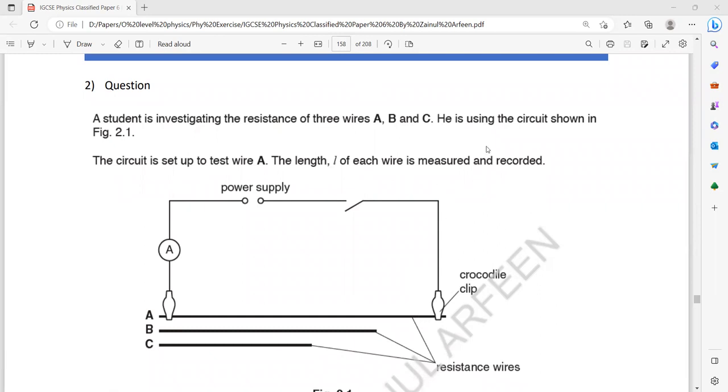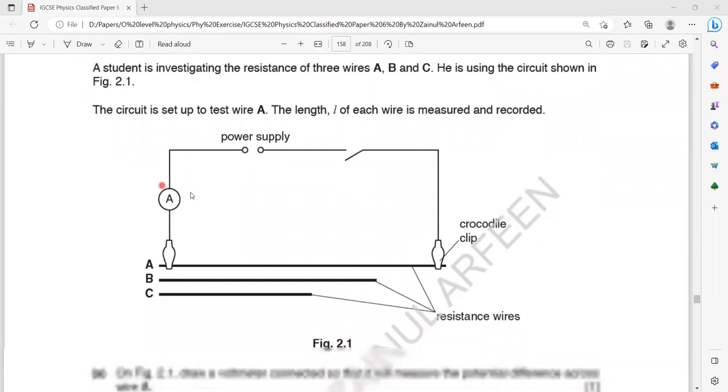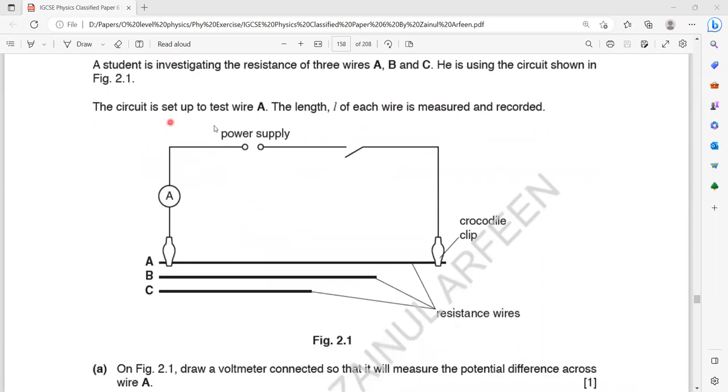What the student did, he's using the circuit as shown in figure 2.1. The circuit is set up to test the wire A. The length L of each wire is measured and recorded. First wire A is there using a crocodile clip. It is clipped from the ends and the current is measured. Then wire B is there, which is using a crocodile clip. We will clip wire B ends and then C.